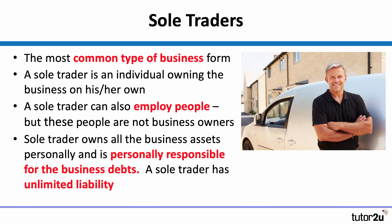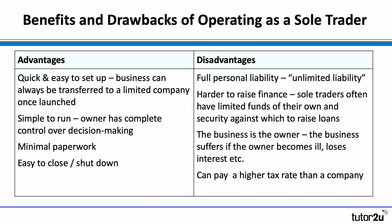Sole traders to start with — by a distance the most popular, most common type of business form — where a single individual owns their own business. That doesn't mean to say they can't employ other people; of course lots do. But the key point is that the sole trader is personally responsible for the business's debts. A sole trader has unlimited liability.